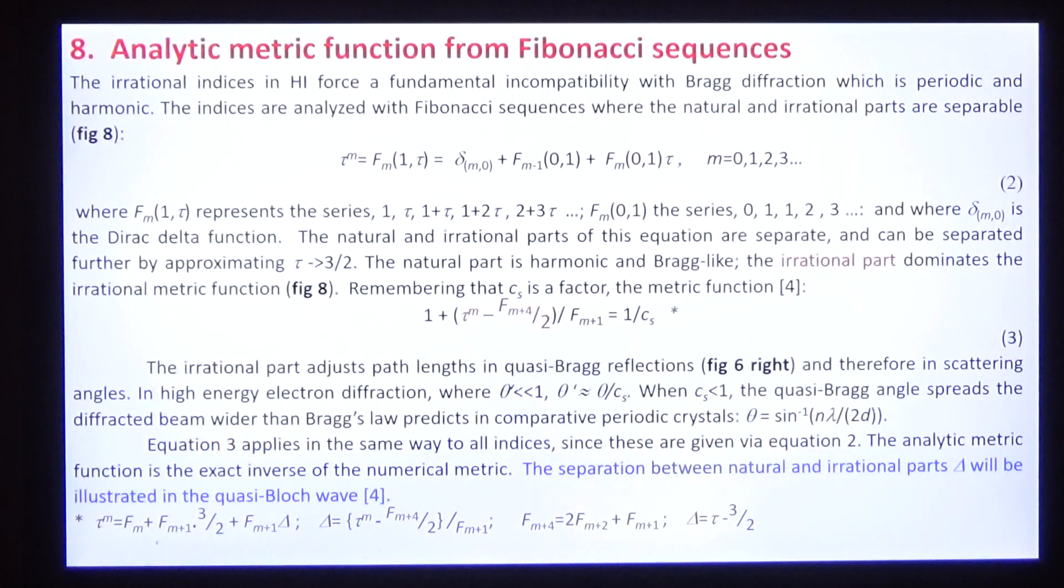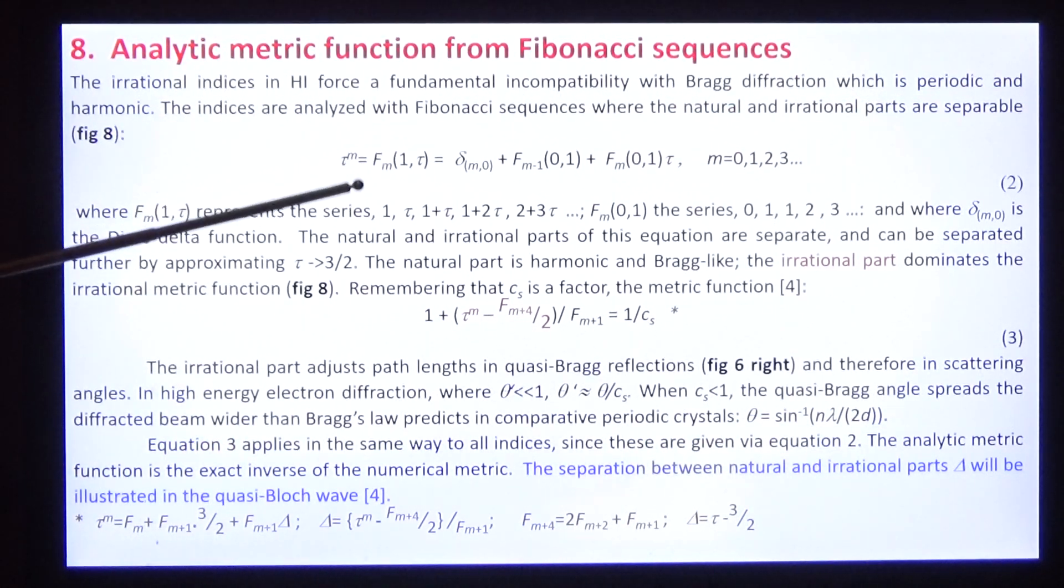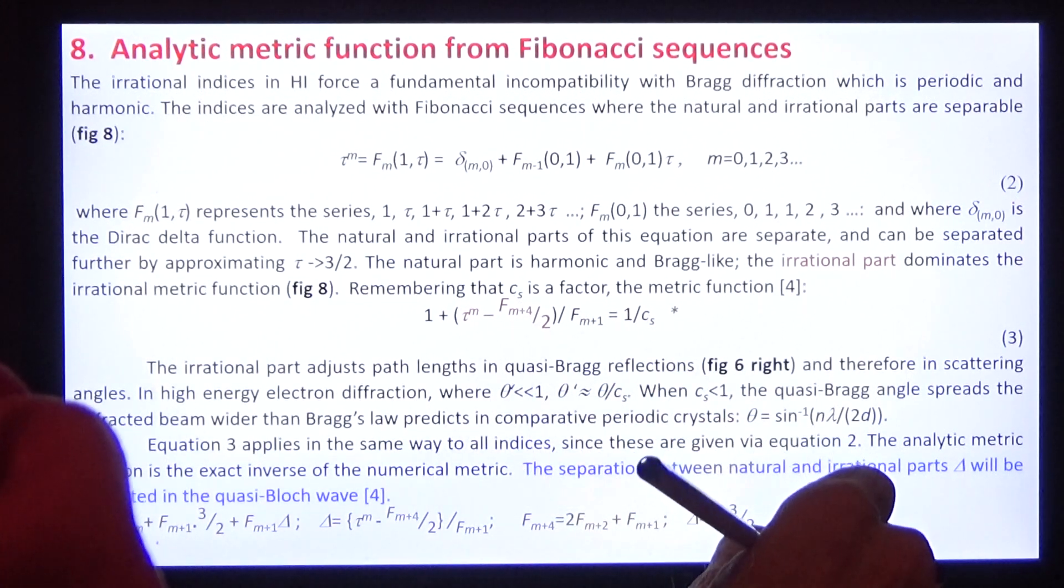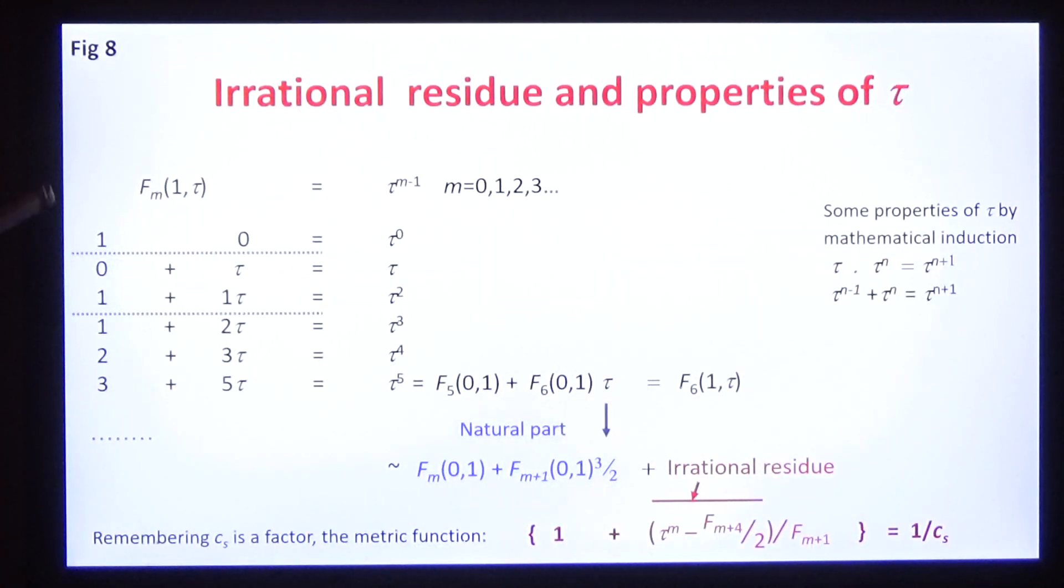Let's find out what that is. We can analyze it. Notice that the geometric term tau to the power m is equal to the corresponding term in the Fibonacci sequence. Here's the Fibonacci sequence: 1 tau, 1 plus tau, 1 plus 2 tau, 2 plus 3 tau, 3 plus 5 tau, where each term is the sum of the two preceding terms. These are equal to this geometric series. You can prove that by mathematical induction.